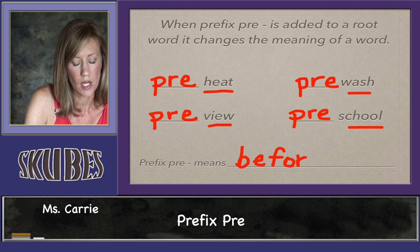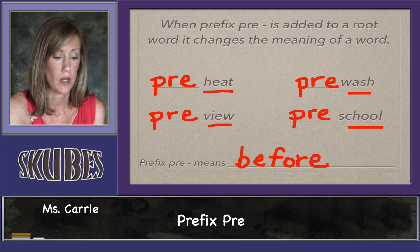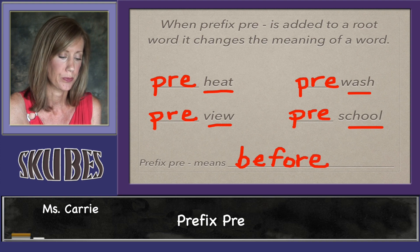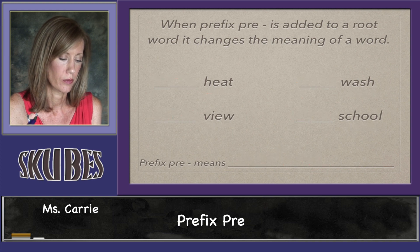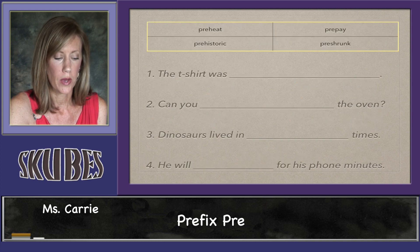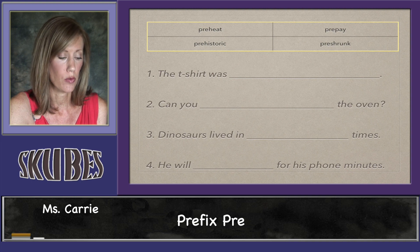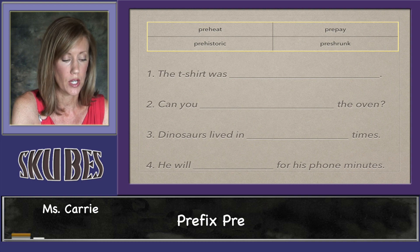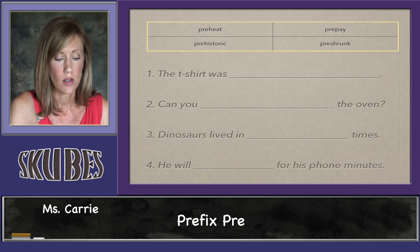Anytime we add that prefix to a root word, it's going to mean before. Let's look at the words in the word bank — they all have 'pre' in them. We have: preheat, prehistoric, prepay, and preshrunk.